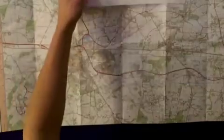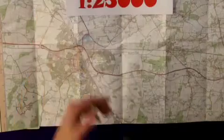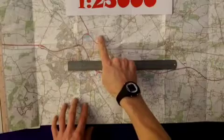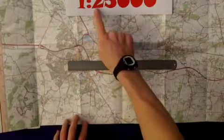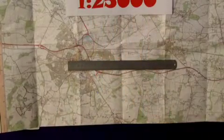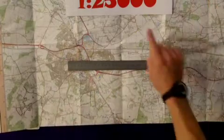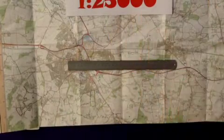Well, in the case of this map, which is 1 to 25,000, if I take any measurement on here, for instance, 1 centimetre, well, in real life, that would represent 25,000 centimetres. Just as if I measured 1 metre on this map, that would represent 25,000 metres in real life.